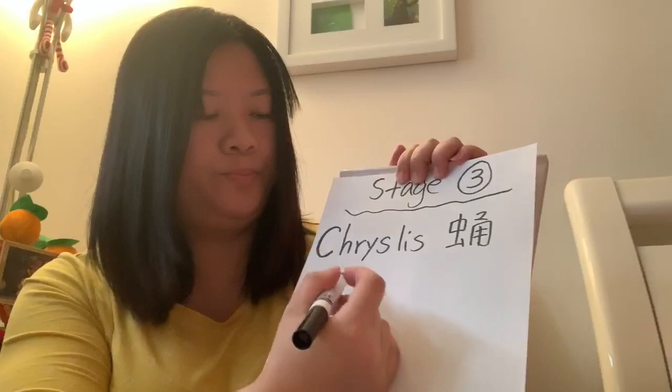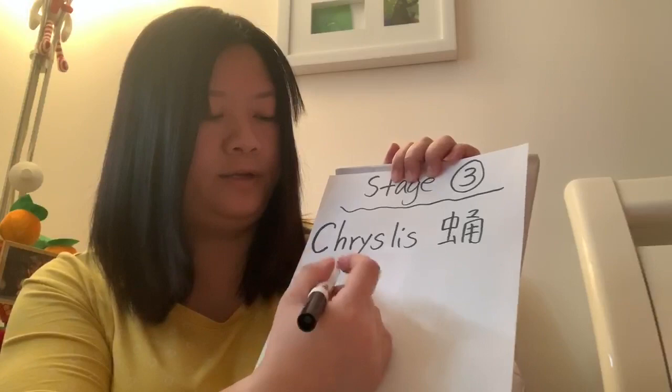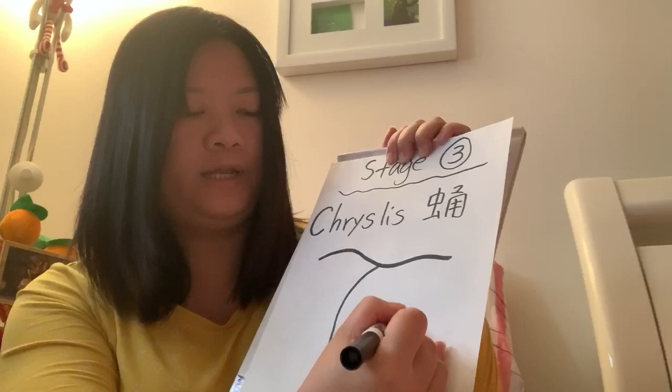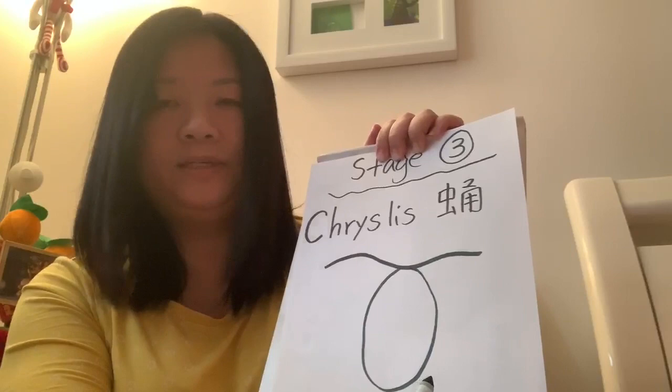首先呢,我們需要一個marker。然後我們畫一個數字。After that, we can draw the oval shape. And then we can draw a kind of crystal shape.